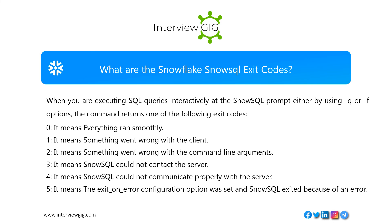What are the Snowflake SnowSQL exit codes? When executing SQL queries interactively at the SnowSQL prompt using -q or -f options, the command returns one of the following exit codes: 0 — everything ran smoothly; 1 — something went wrong with the client; 2 — something went wrong with the command-line arguments; 3 — SnowSQL could not contact the server; 4 — SnowSQL could not communicate properly with the server; 5 — the exit_on_error configuration option was set and SnowSQL exited because of an error.